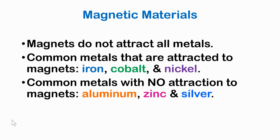So what kind of materials are magnetic? Mainly, we're thinking about three metals. Magnets do not attract to all metals. Common metals that are attracted to magnets are iron, cobalt, and nickel. So when you think of permanent magnets, those are the ones you're usually thinking of. Rare earth magnets have a little bit more unique chemistry and unique design to make them work. But iron, cobalt, and nickel, those are things you're thinking about the most when you are referring to magnets.